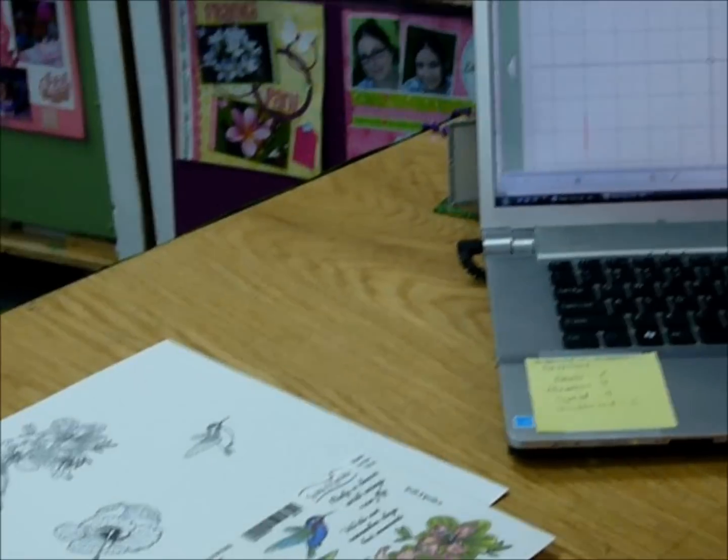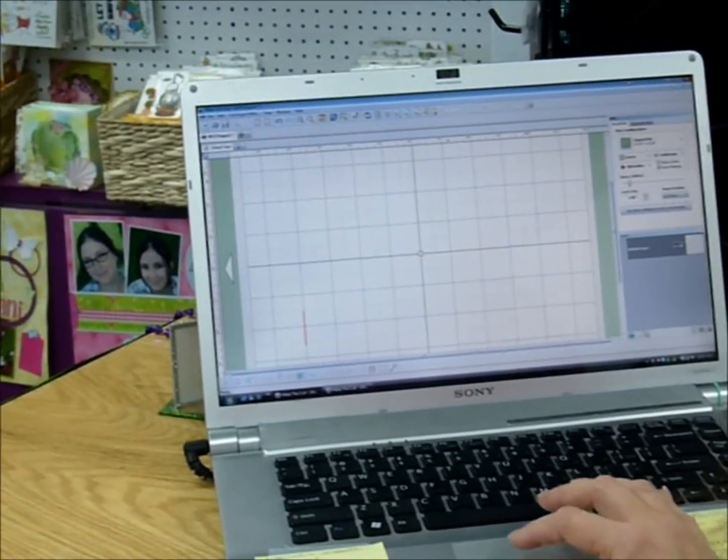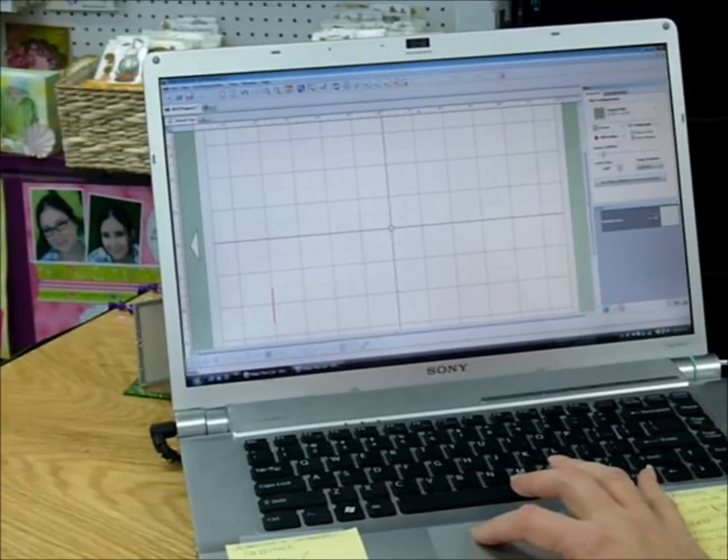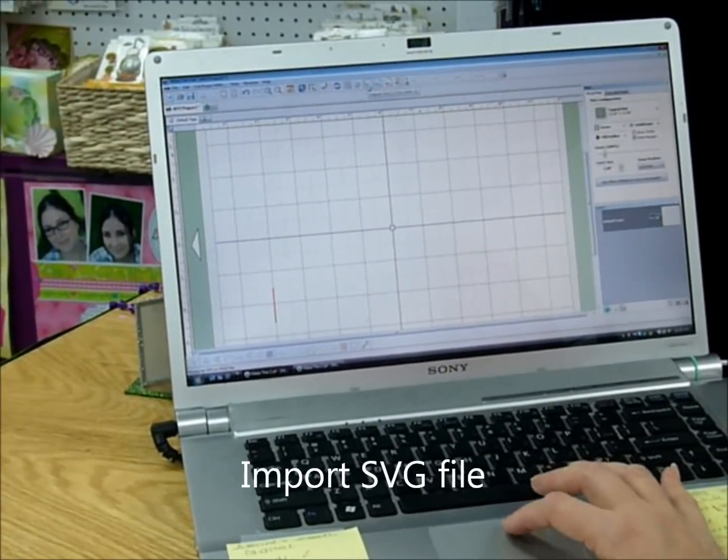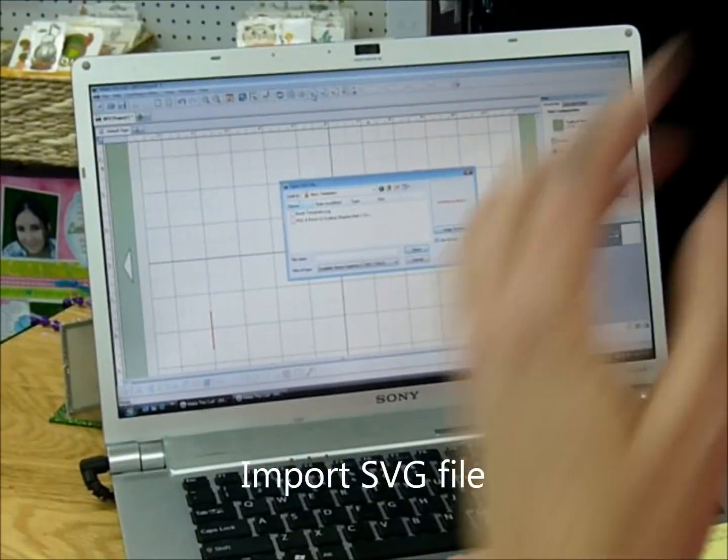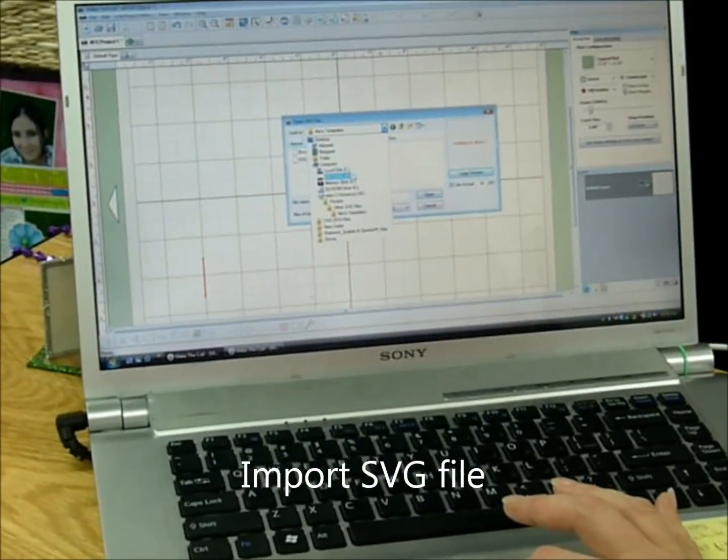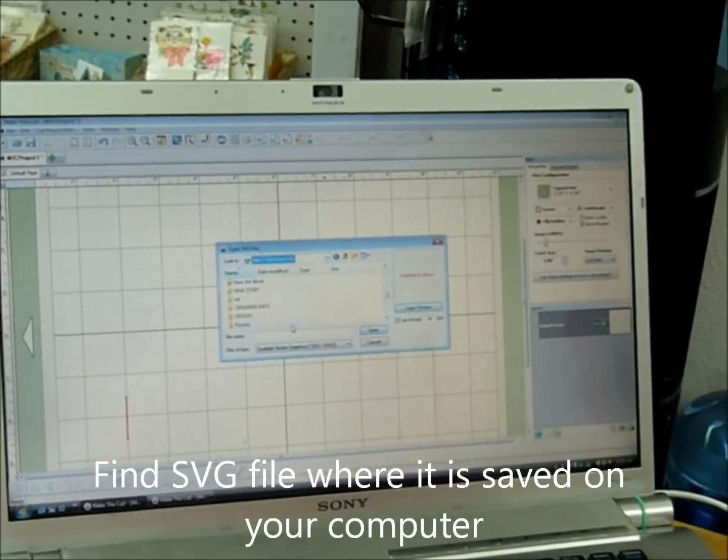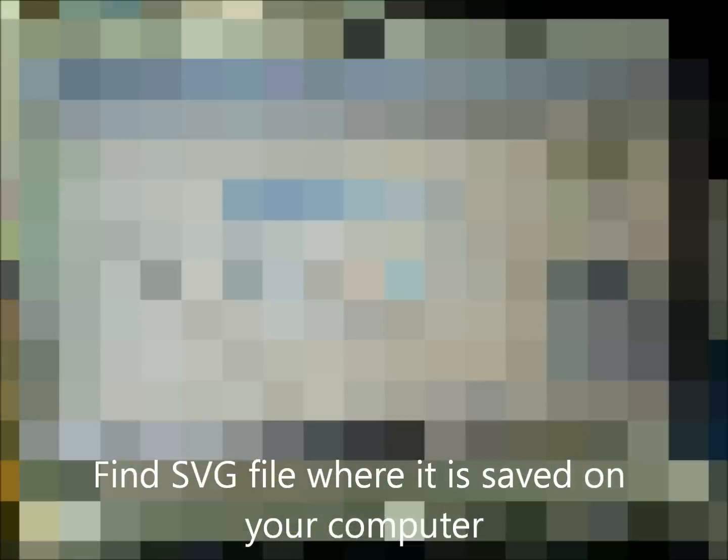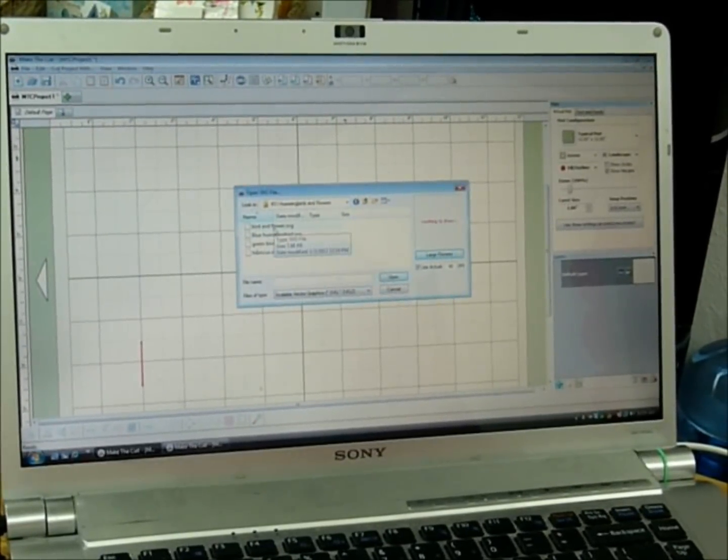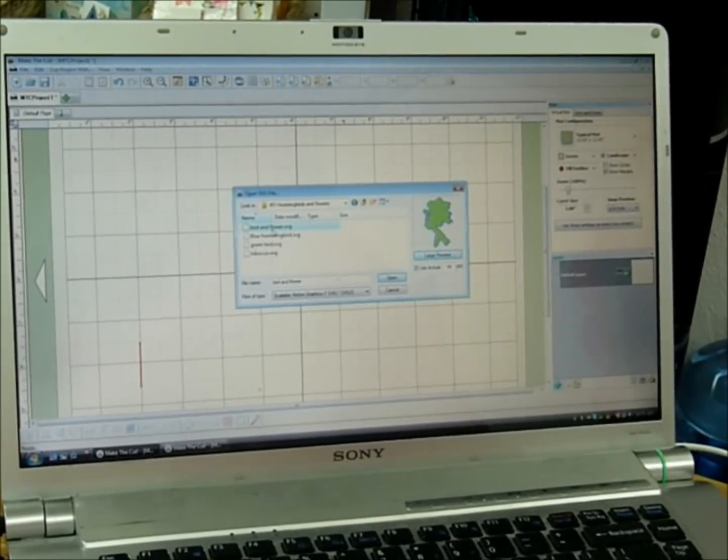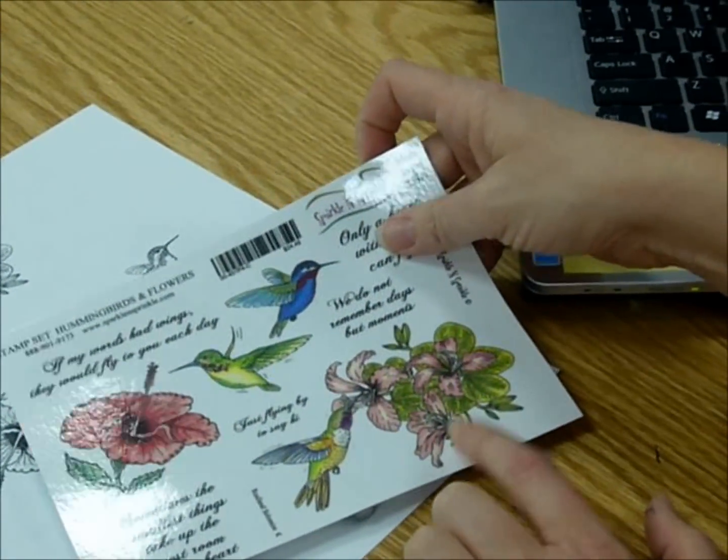First what I'm going to do is have Make the Cut open and I'm going to import the cut file by coming into SVG where it says import SVG, import this and then I'm going to go to where I have these located. And here they are, hummingbirds and flowers.